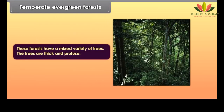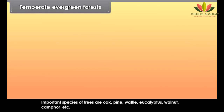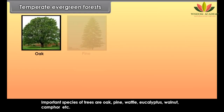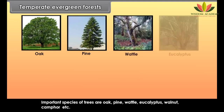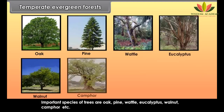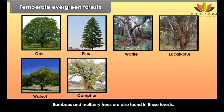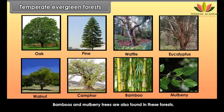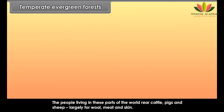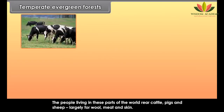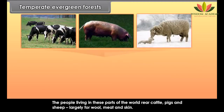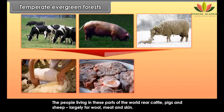Characteristics: These forests have a mixed variety of thick and profuse trees. Important species include oak, pine, wattle, eucalyptus, walnut and camphor. Bamboos and mulberry trees are also found in these forests. The people living in these parts of the world largely rear cattle, pigs and sheep for wool, meat and skin.